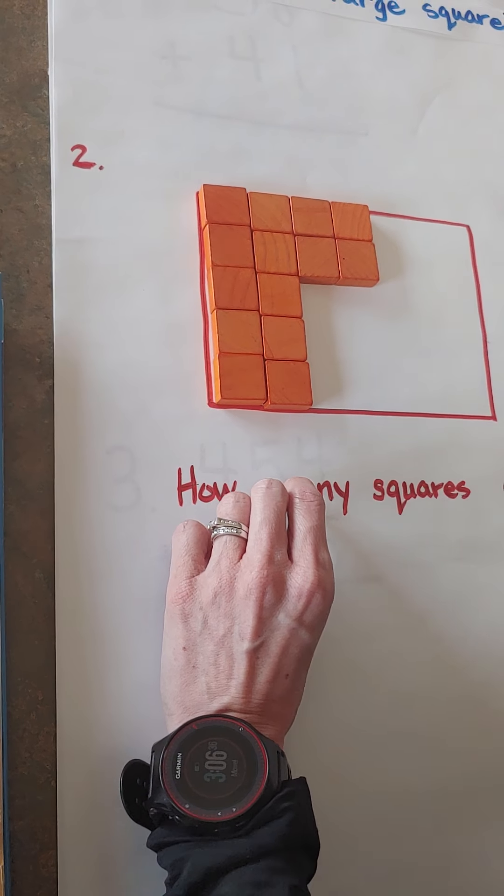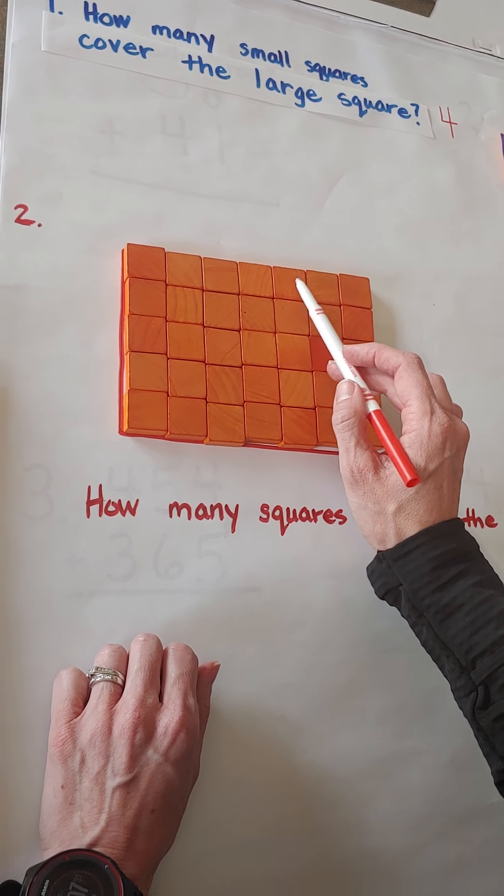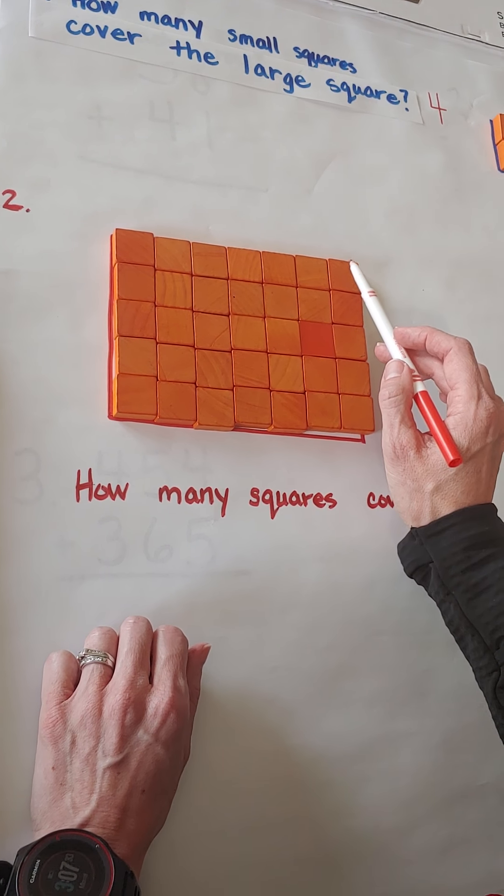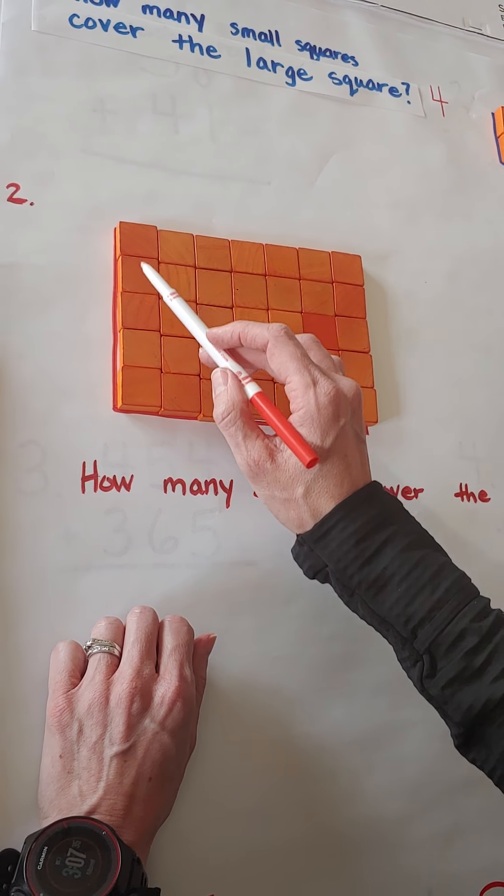Alright. How many did we get here? How many squares cover that rectangle? 1, 2, 3, 4, 5, 6, 7, 8, 9, 10, 11, 12, 13, 14, 15, 16, 17, 18, 19, 20, 21, 22, 23, 24, 25, 26, 27, 28, 29, 30, 31, 32, 33, 34, 35. I counted 35, friends.